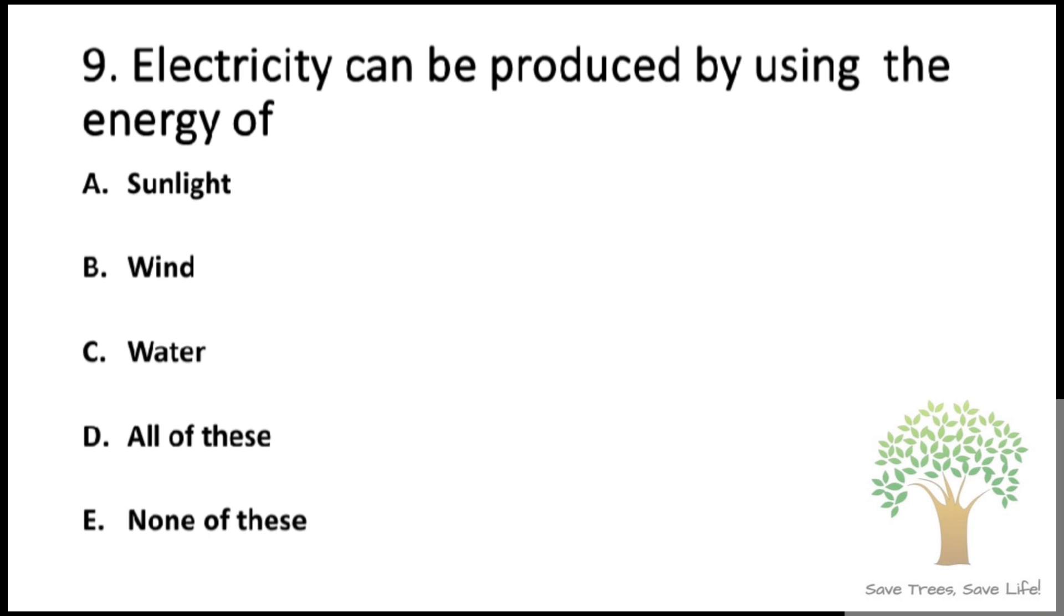Question number 9: Electricity can be produced by using the energy of A. Sunlight, B. Wind, C. Water, D. All of these, E. None of these. So the answer is option D, All of these.